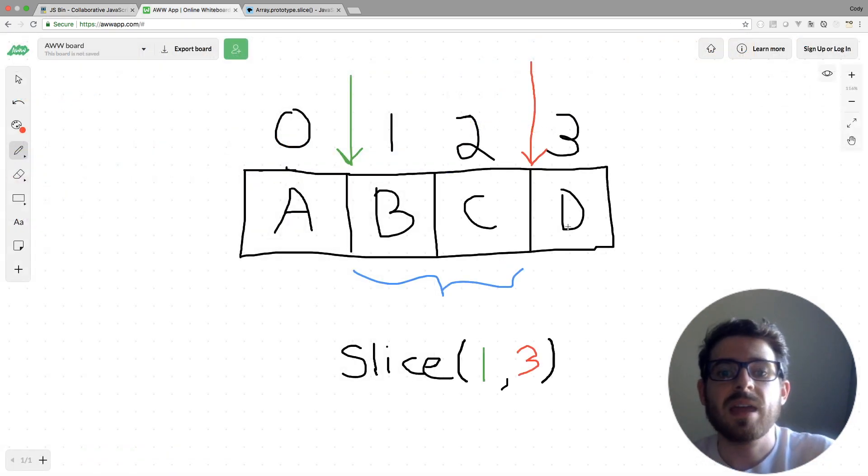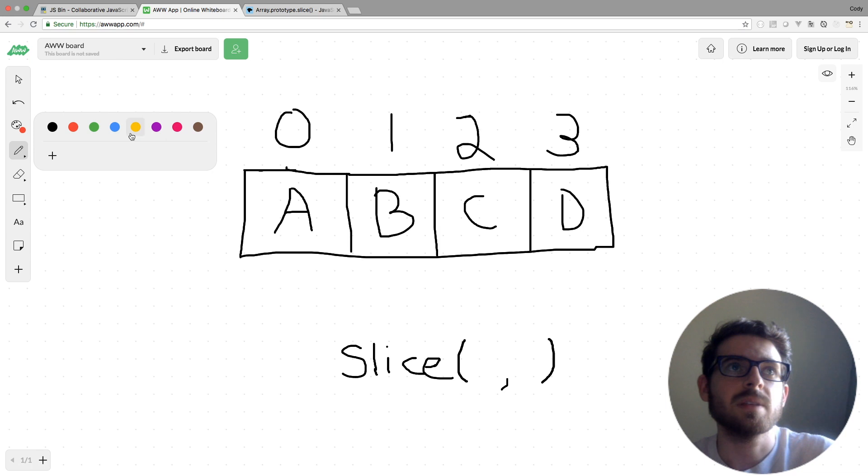Notice we can do the exact same thing with negative numbers. So if I were to erase this, and we wanted to grab, let's say, A and B. Of course, we could just do one comma two if we wanted to get that. But to demonstrate the negative numbers that we can use, we could do a negative four, which is going to put us at negative one, negative two, negative three, negative four.